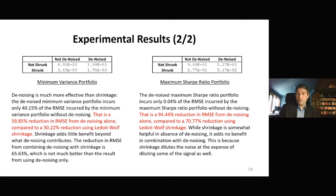However, when we denoise the correlation matrix, now there is a substantial improvement. In fact, we are able to reduce the root mean square error by 94%. Having worked in finance for over 20 years, it is rather unusual to find situations where a particular method can be so effective. A 94% reduction in root mean square error is very significant. We are not talking about a minor improvement — we are talking about a rather radical improvement in the stability of the efficient frontier.